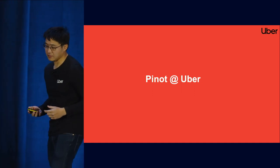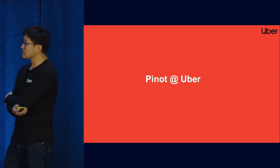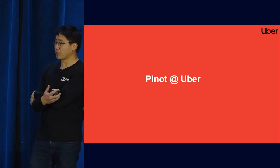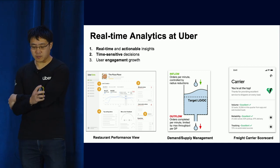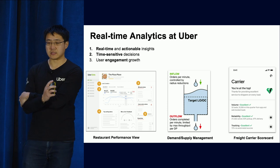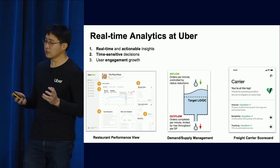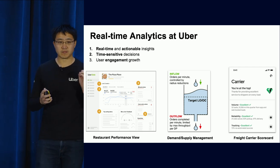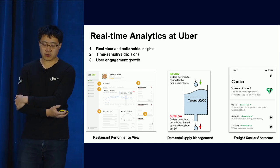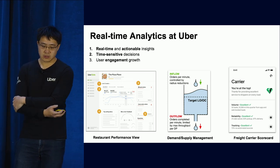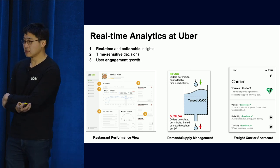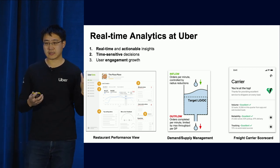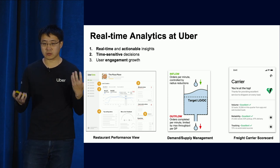Thanks Nan, for sharing our migration journey. I'll talk about how we use Pinot at Uber in general, and particularly around bridging these gaps. Before talking about business metrics, I want to give a highlight overview of real-time analytics at Uber, which is a very exciting domain where we use Apache Pinot as a core system to empower many mission-critical use cases. We mainly leverage it for three purposes: real-time and actionable insights, time-sensitive decisions, and increasing user engagement.